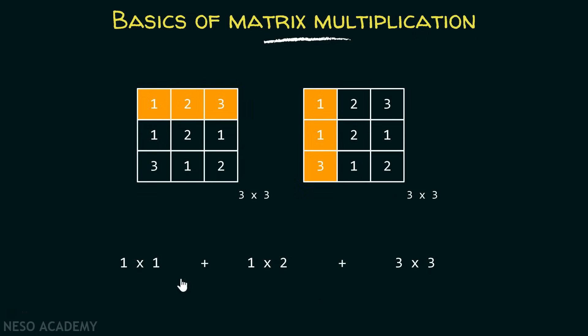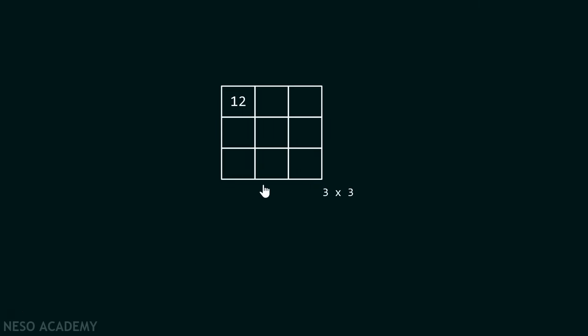1 × 1 is 1. 1 × 2 is 2. 3 × 3 is 9. 9 plus 2 plus 1 is equal to 12. Therefore, 12 will get stored in this particular location of the resultant matrix.